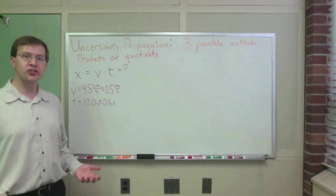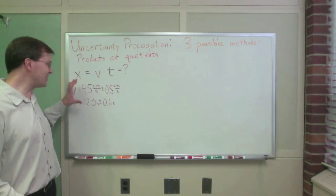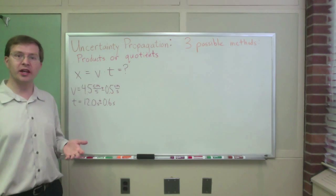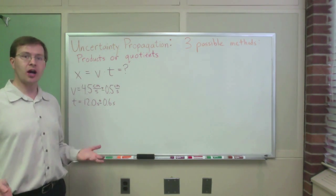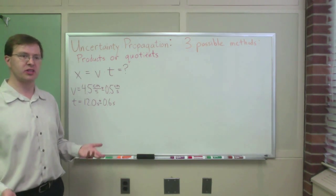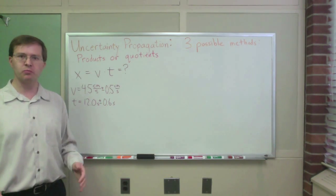As we talk about uncertainty propagation from measurements that have uncertainties associated with them to the results of some calculation where we'd like to know not just the result but also the uncertainty in our result, another common case that comes up is the case where we're multiplying or dividing two numbers, products or quotients of numbers. The same rules apply to both.